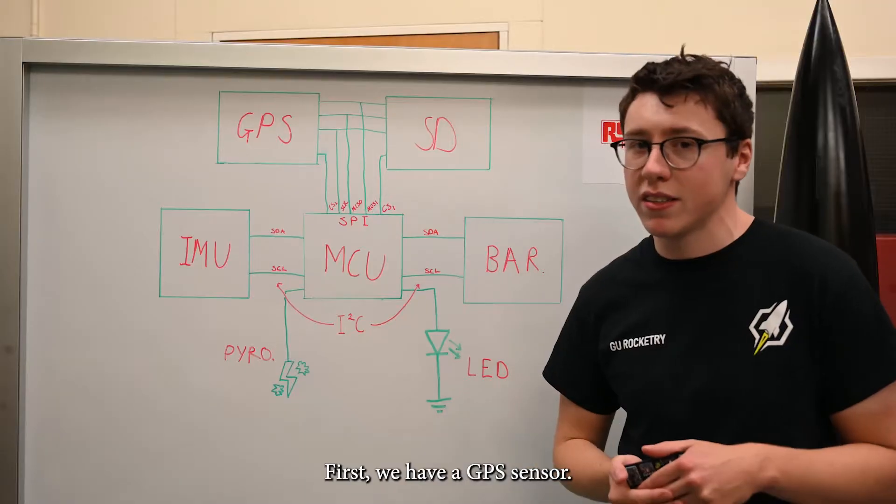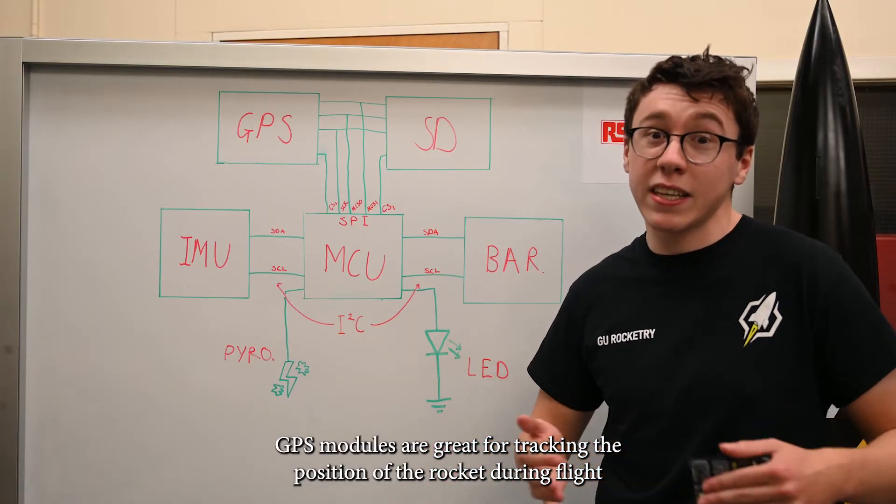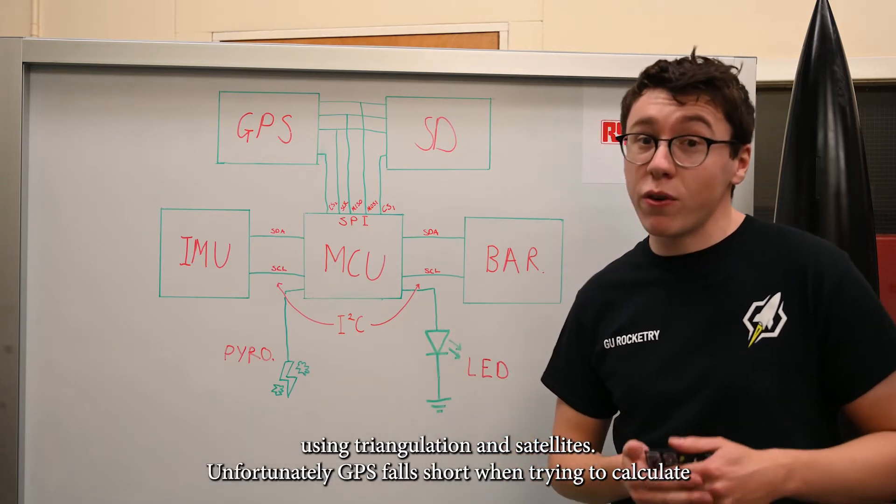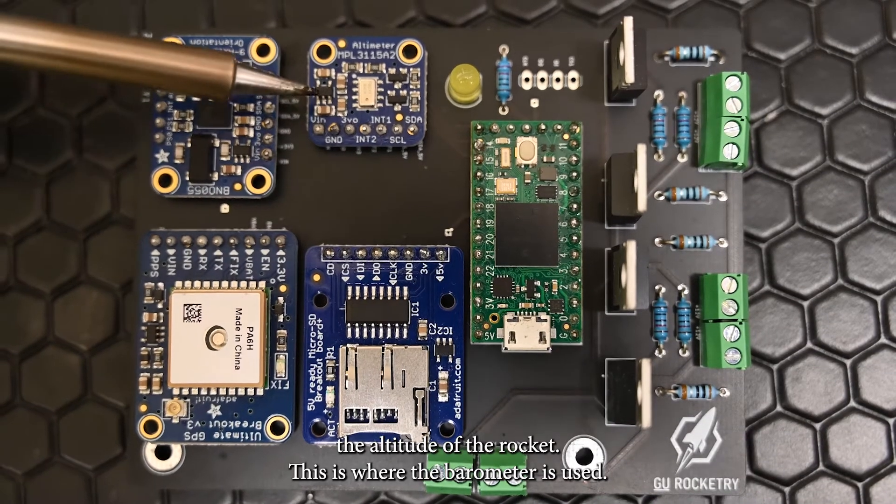Now we've all heard of GPS. GPS locates the position of the rocket through triangulation through satellites. Unfortunately, GPS falls short when trying to work at the altitude of the rocket. This is where the barometer comes into play.